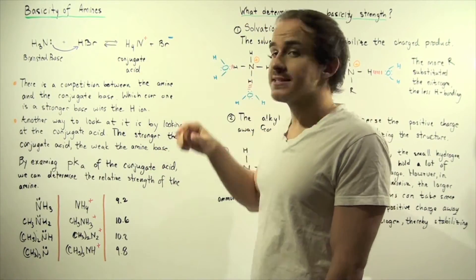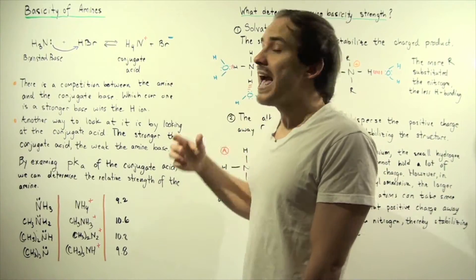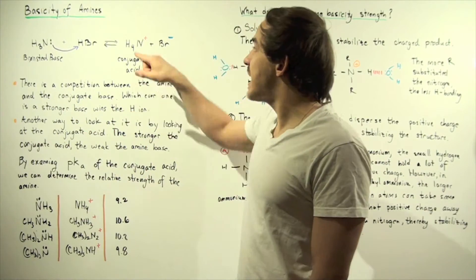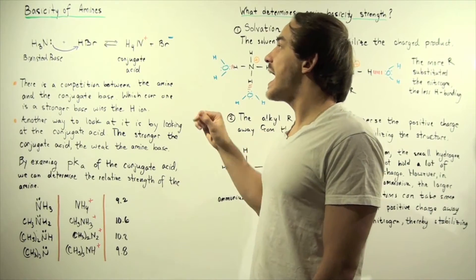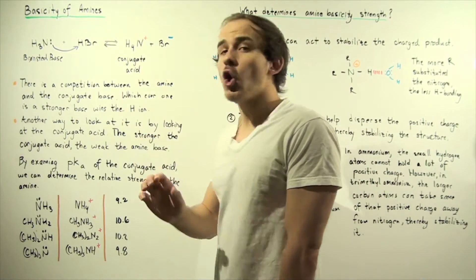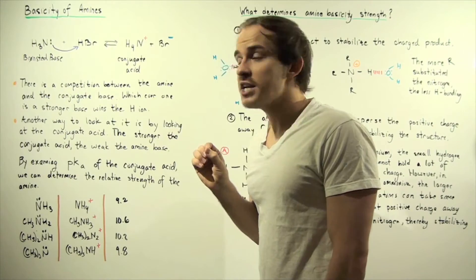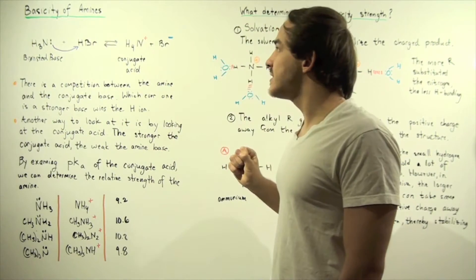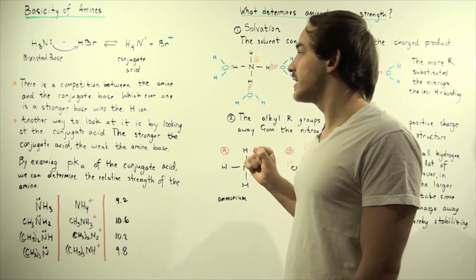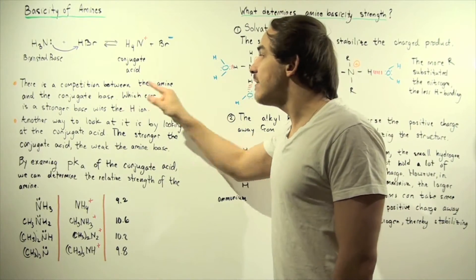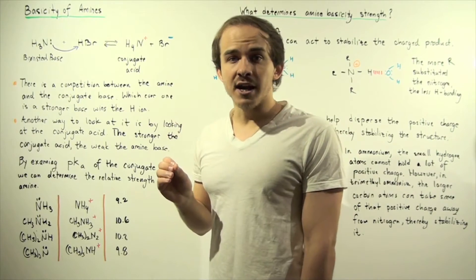If the product-side base is the stronger base, it is better able to take away that H atom from ammonium, and so our reaction is reactant favored. There is a competition between these two bases — between the amine and the conjugate base on the product side. Whichever one is a stronger base wins the H ion.